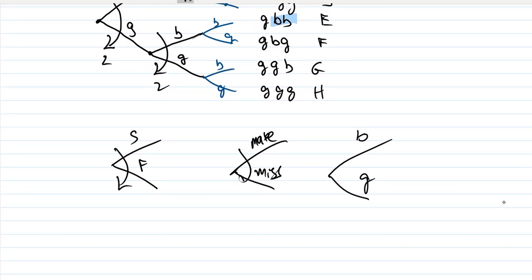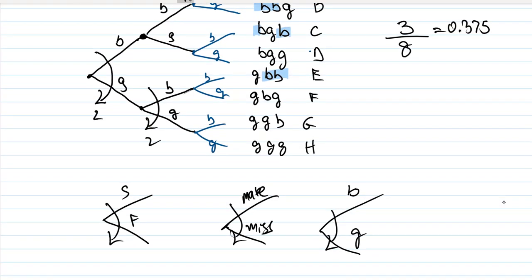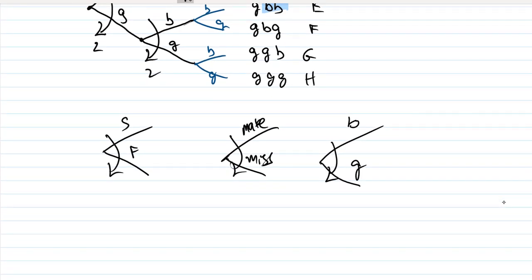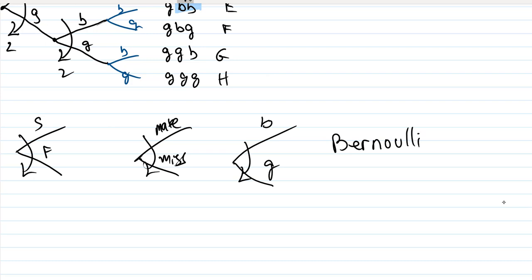There are two outcomes and it can only be one of those two outcomes — whether it's boy or girl, or a free throw make or miss, or any event where it can be one thing or another. These scenarios are considered Bernoulli events, or binomial scenarios, and we'll see more about that a little bit later.